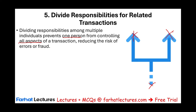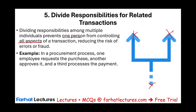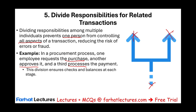One person could make mistakes; if you have other people looking over their shoulders, that helps. Or for fraud — they cannot commit fraud because someone else is on the transaction with them. In a purchase transaction, one employee requests the purchase, another approves it, a third processes the payment, and a fourth receives the goods. This division ensures checks and balances at each stage.